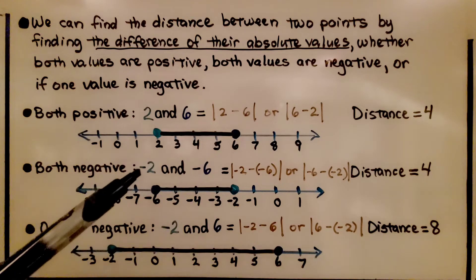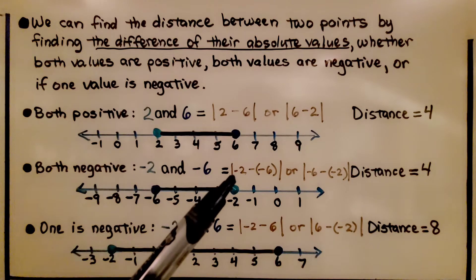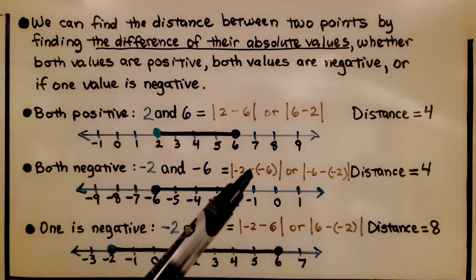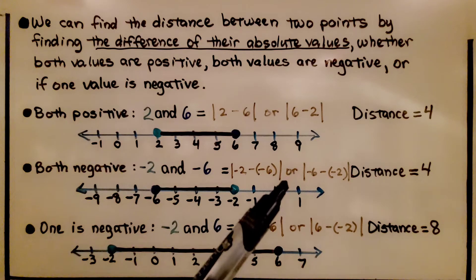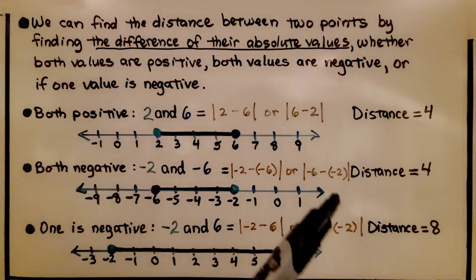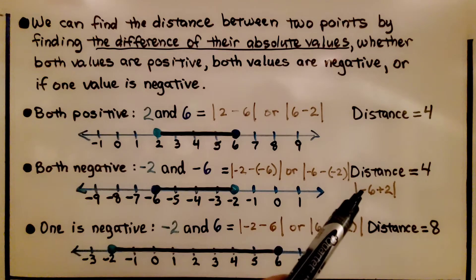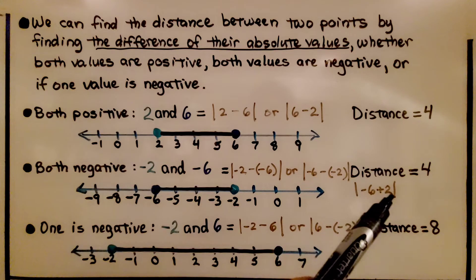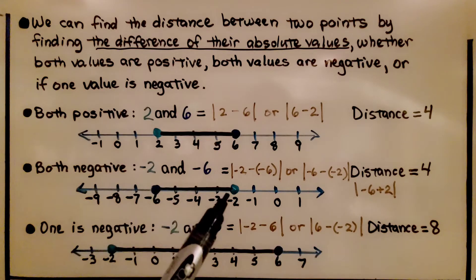If they're both negative, we have negative two and negative six. We find the absolute value of negative two minus negative six, or the absolute value of negative six minus negative two. The distance is going to be four. We can also add the opposite — put a plus and make that a positive — and say the absolute value of negative six plus two. We still get four for our distance.